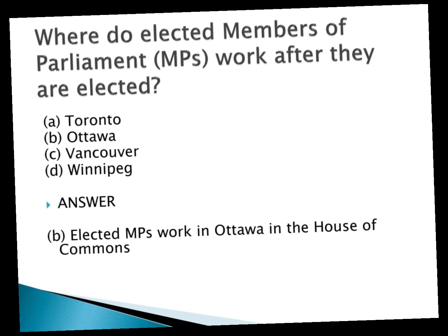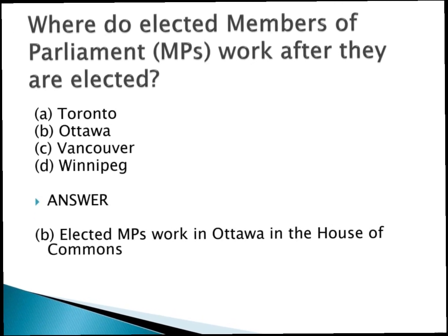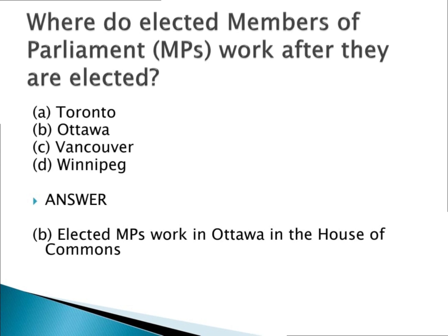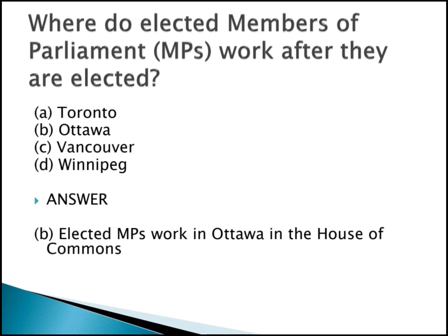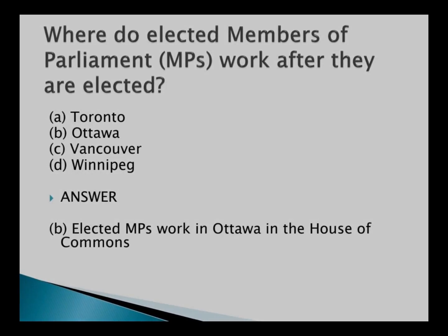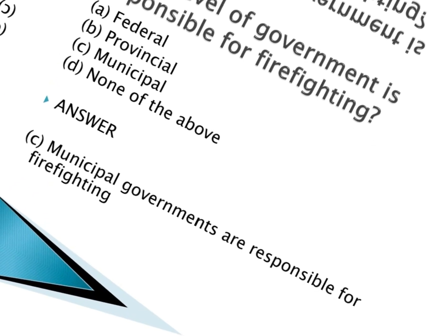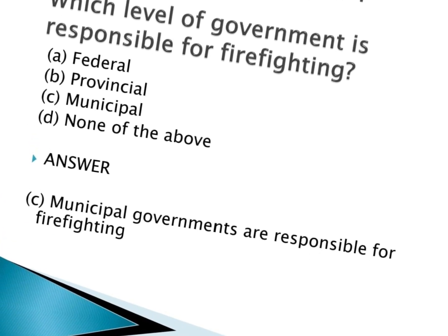Where do elected members of Parliament (MPs) work after they are elected? a. Toronto. b. Ottawa. c. Vancouver. d. Winnipeg. Answer: b. Elected MPs work in Ottawa in the House of Commons.